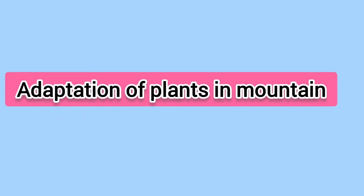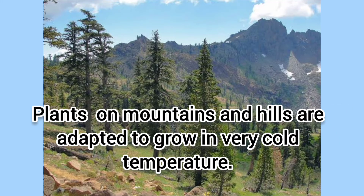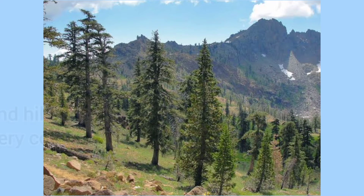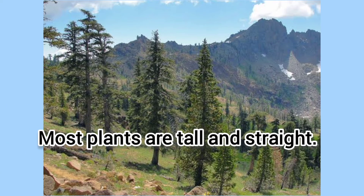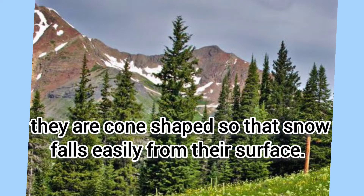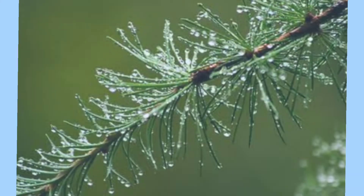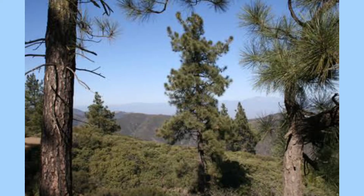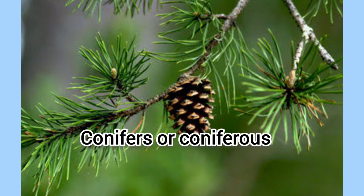Adaptation of plants in mountains: Plants on mountains and hills are adapted to grow in very cold temperatures. Most plants are tall and straight, and cone-shaped so that snow falls off easily from their surface. They have needle-like leaves to prevent too much water loss. The trees have a trunk with a thick bark. These trees do not bear fruit but have seeds in cones; they are called conifers or coniferous trees. Pine, fir, and Deodar are examples of plants found in mountains.